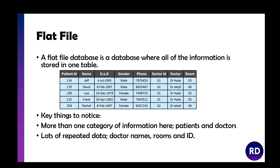A flat file database is a database where all the information is stored in one table, so everything is all in one place. Usually when we talk about a flat file database we're talking about a spreadsheet like Excel — even though that's technically a spreadsheet and not a database, a spreadsheet is essentially a flat file database. As you can see in the example, there's lots of repeated data and more than one category of information — I've got patient information and doctor information, when really those should be two separate things.